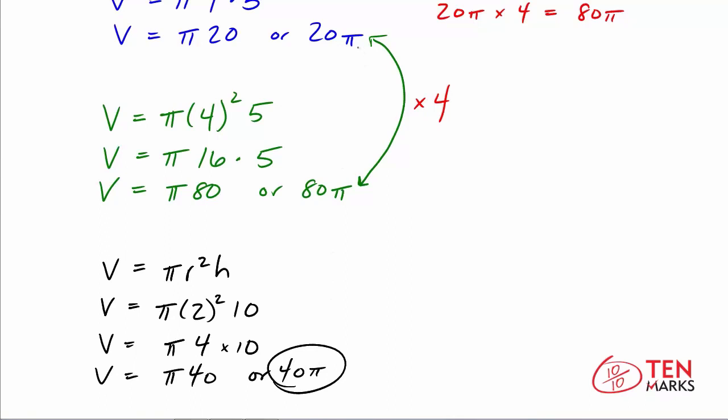Okay, so now we've got 40 pi in the mix. We had 20 pi was the original volume. 80 pi is what we got when we multiplied the radius by 2, or doubled the radius, and now 40 pi is what we get when we double the height only. So now compare 20 and 40. 40 pi is a factor of 2 greater than 20 pi. It's double 20 pi. So when you double the height of a cylinder, the volume doubles.